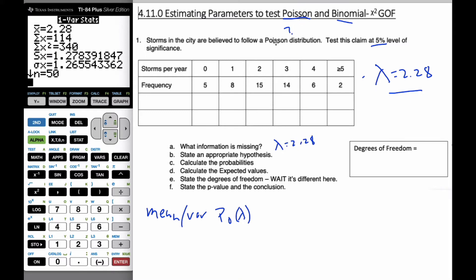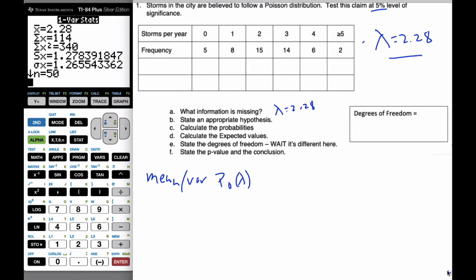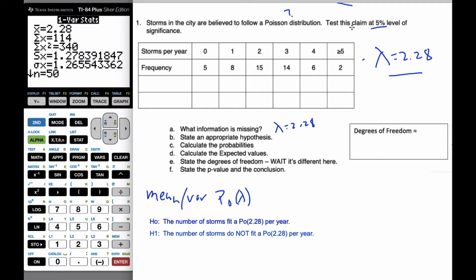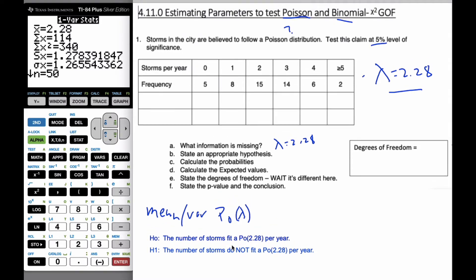And so based upon that, I want to know, does this frequency fit a Poisson distribution? And so my hypothesis is going to be these. Because it's a goodness of fit test, in all hypotheses, does it fit? The number of storms fits a Poisson distribution of 2.28 per year. And the alternative, it does not fit this Poisson distribution.